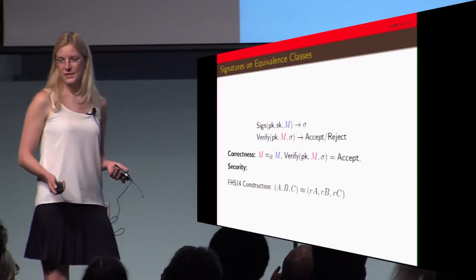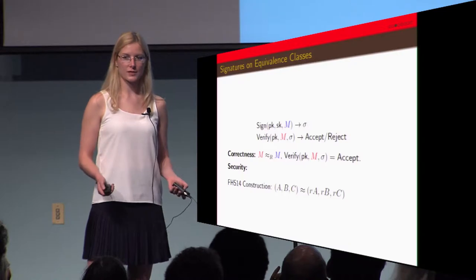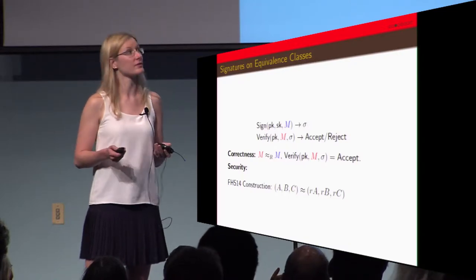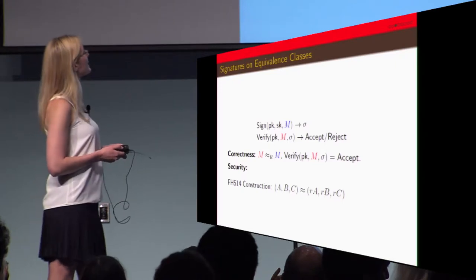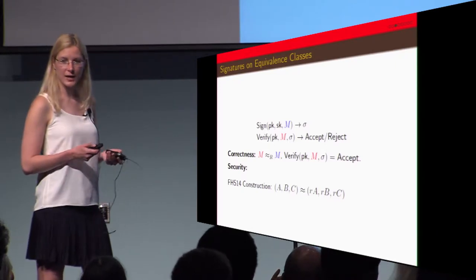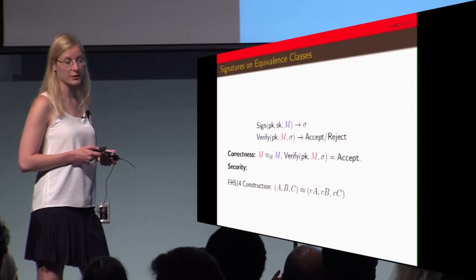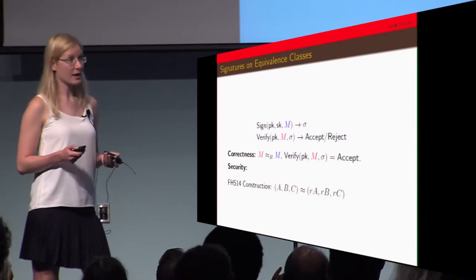We can take this one step further by introducing signatures on equivalence classes. In this case we're looking at messages in the same equivalence class, and correctness means that if we have messages within the same equivalence class then the verify algorithm will accept.